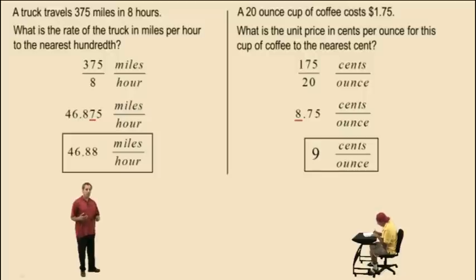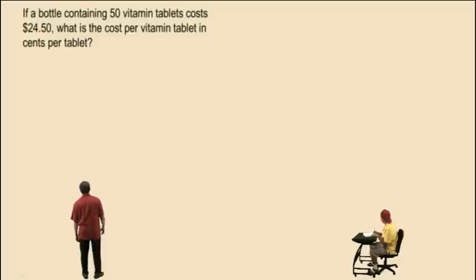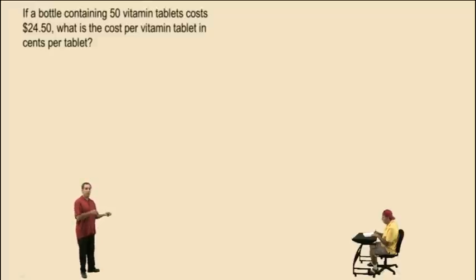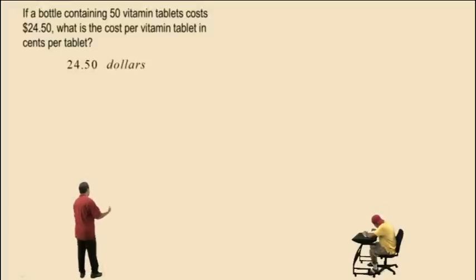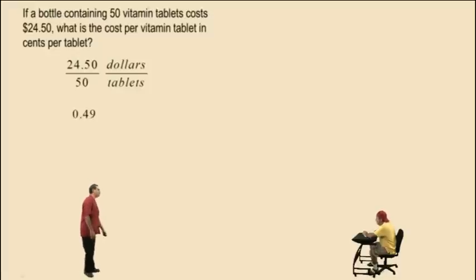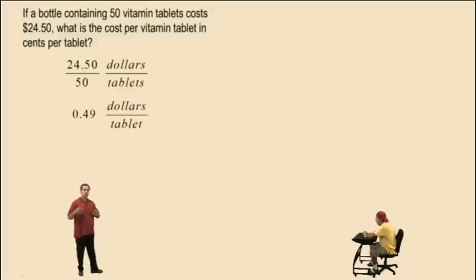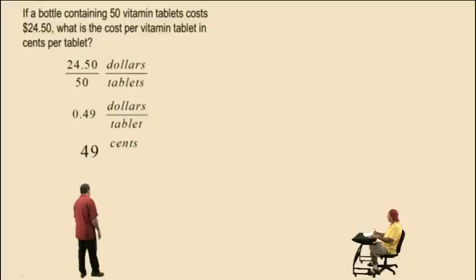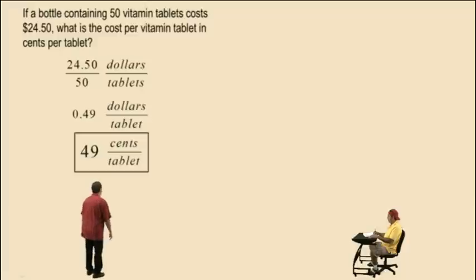If a bottle containing 50 vitamin tablets costs $24.50, what is the cost per vitamin tablet in cents per tablet? We are given a dollar amount and asked for a unit cost in cents per tablet. Let's start with $24.50 over 50 tablets. 24.50 divided by 50 is 0.49. The units are dollars per tablet. If you have $0.49, that's 49 cents. So the unit cost is 49 cents per tablet.